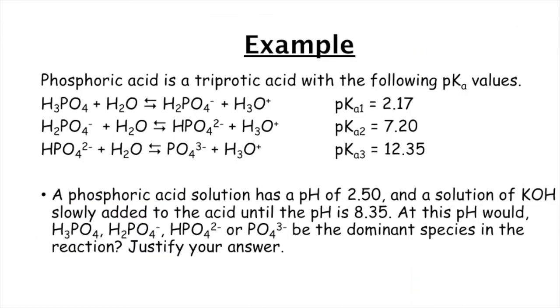All right. And last but not least, if we're talking about a triprotic acid such as phosphoric acid, we are given the three dissociation equations and their pKa values. It says that originally our acid solution had a pH of 2.5 and KOH, which is a strong base, was added until the acid reached a pH of 8.35.